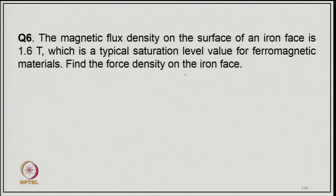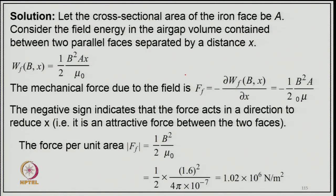Example 6: The magnetic flux density on the surface of an iron face is 1.6 T (a typical saturation level). Find the force density of the iron face. Solution: Let the cross-sectional area of the iron face be A. Considering the field energy in the gap volume between two parallel faces separated by distance x: W_f(B, x) = ½B²Ax/μ₀. The mechanical force is F_f = −∂W_f/∂x = −½B²A/μ₀, where the negative sign indicates attraction. Force per unit area = ½B²/μ₀ = ½ × 1.6² / (4π × 10⁻⁷) = 1.02 × 10⁶ N/m².